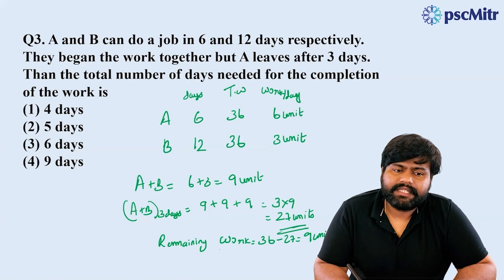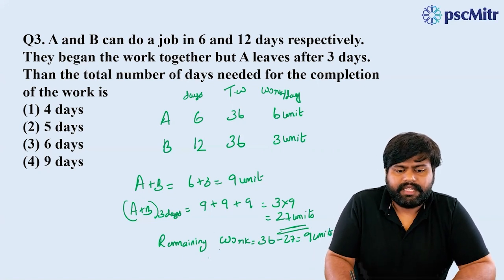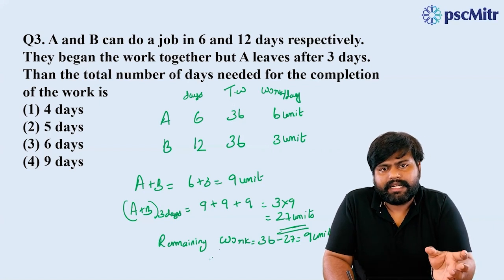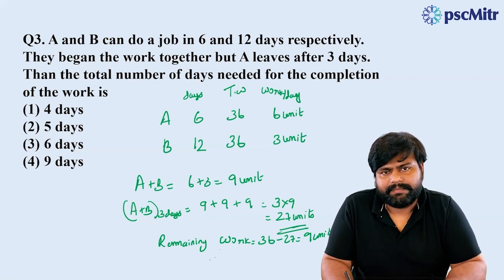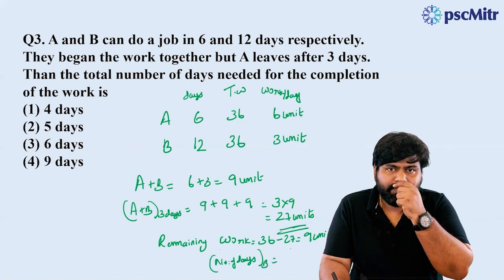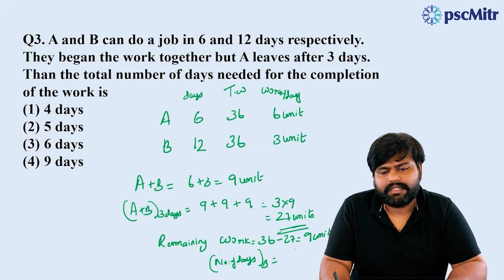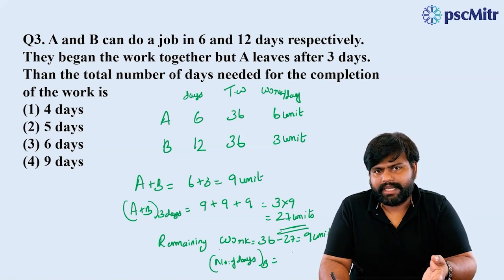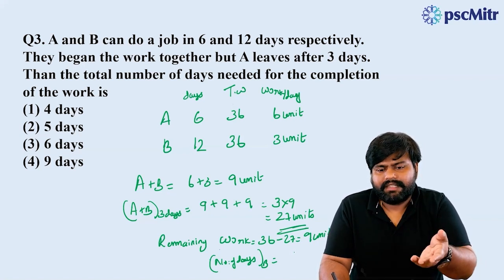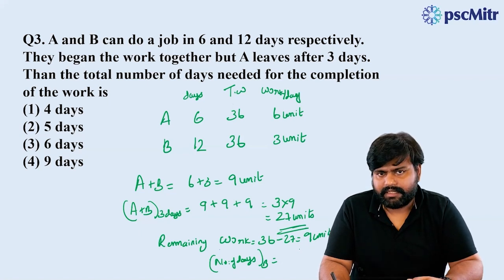These 9 units remain. How much time will it take? We will use B to complete 9 units of work. One day B does 3 units of work. So the remaining work is 9 divided by 3, which gives 3 days.